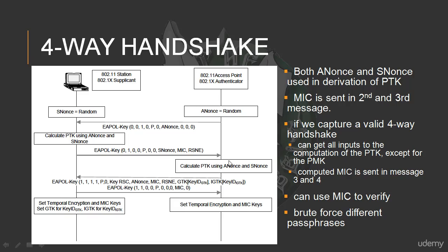Now, calculating the PTK — in a real access point it would do that, but the fake access point doesn't have to, because it's not needed in the following message. It just needs to send back the MIC, ANonce, and some other keys, which can be fake information — it doesn't really matter. We don't even need to complete a four-way handshake, because with just the first two messages we already have the ANonce, SNonce, and MIC. So the fake access point has the information it needs, and we can then run a dictionary attack using different passphrases.